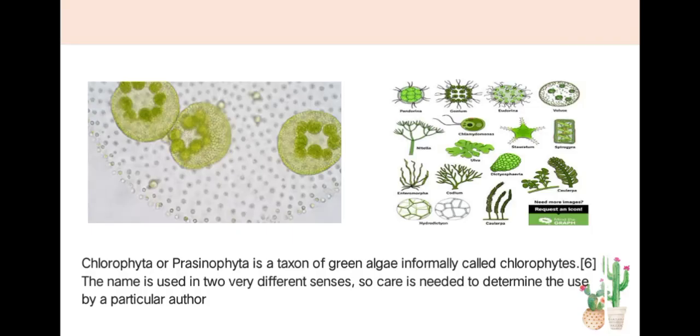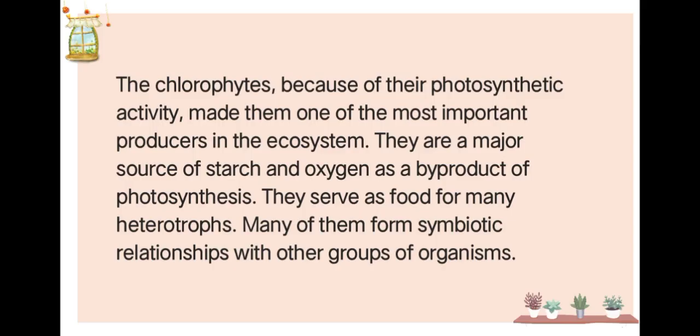Next, Chlorophyta or Prasinophyta — a taxon of green algae informally called chlorophytes. Because of their photosynthetic activity, chlorophytes are one of the most important producers in the ecosystem. They are the major source of starch and oxygen as a byproduct of photosynthesis. They serve as food for many heterotrophs, and many of them form symbiotic relationships with other groups of organisms.